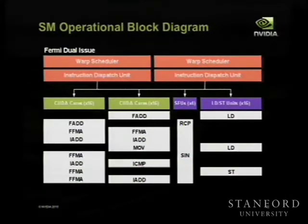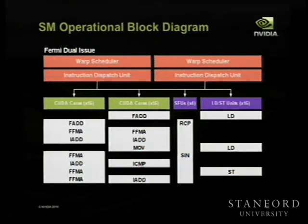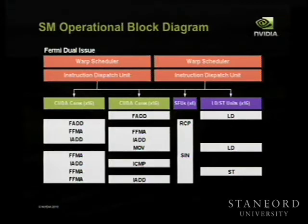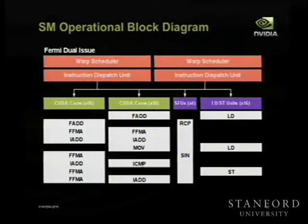Operationally, what's going on inside an SM? For Fermi, you can picture previous generations and just delete one of the warp scheduler instruction dispatch units. G80 and GT200 only have a single one. In Fermi, we have two of them, so we can actually issue two completely different instructions per clock simultaneously.